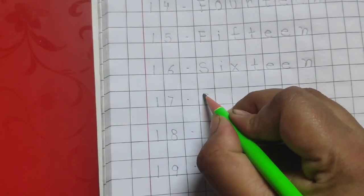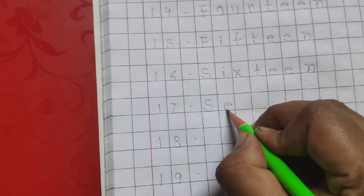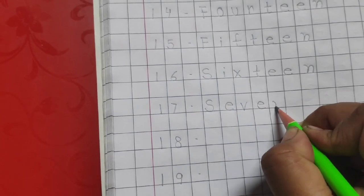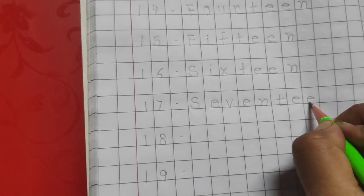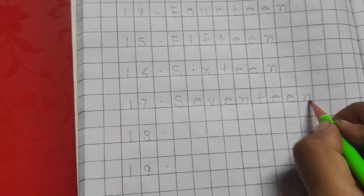And the next number is 17. The number name for 17 is S-E-V-E-N-T-E-E-N.